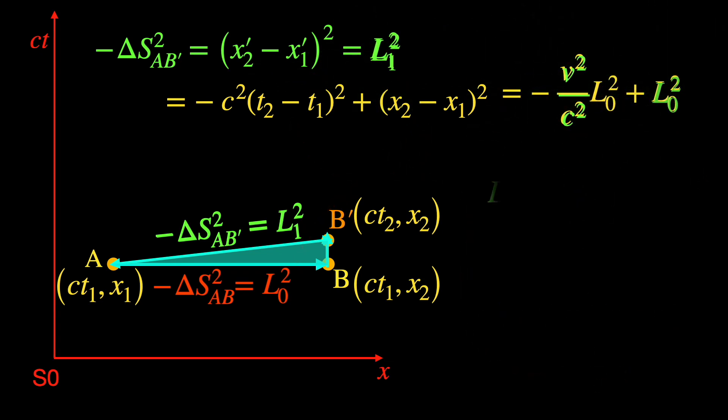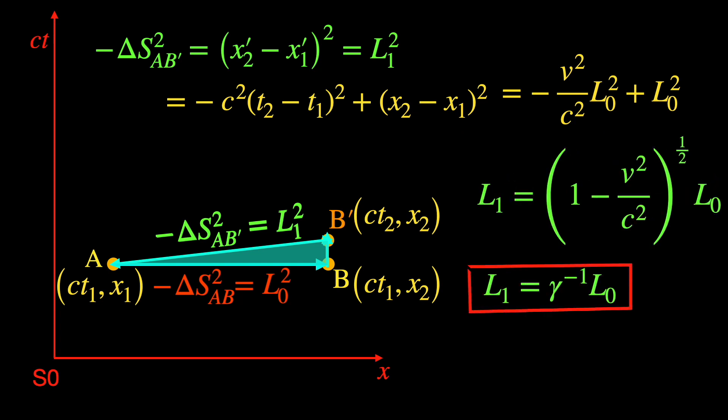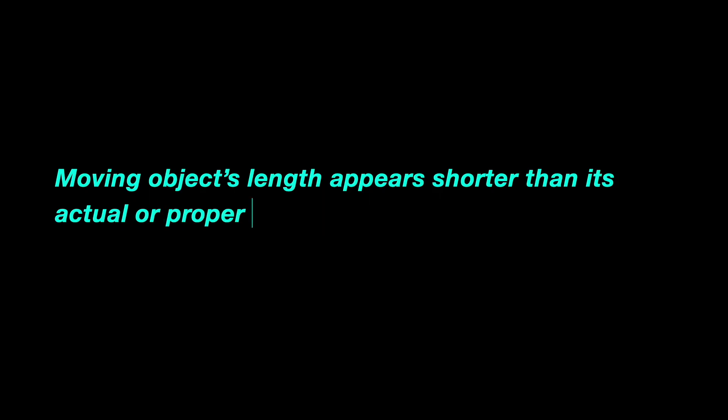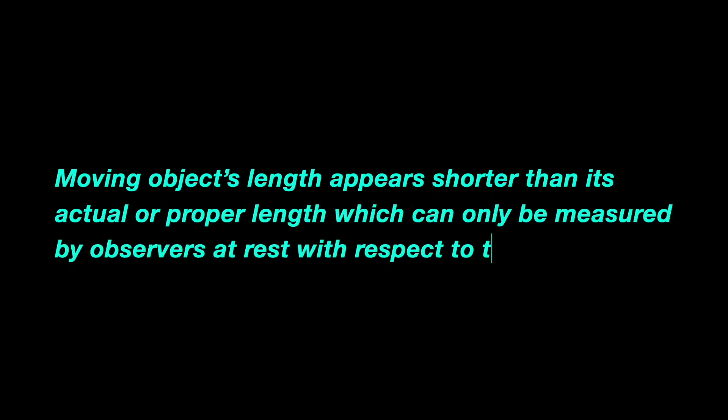This helps us write the entire ΔS²ₐᵦ' in terms of L₀². Taking L₀² common and square rooting the equation we arrive at the length contraction formula which shows that the length L₁ measured by the S1 frame observer is shorter than the rest length L₀ by the inverse of the Lorentz factor γ which is always a fraction. Another way to put it is moving object's length appears shorter than its actual or proper length which can only be measured by observers at rest with respect to that object.